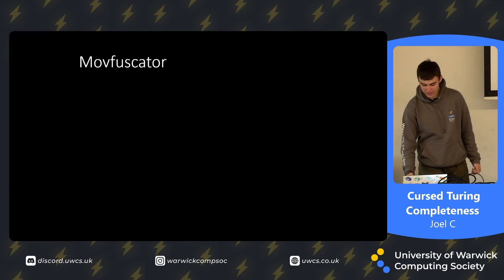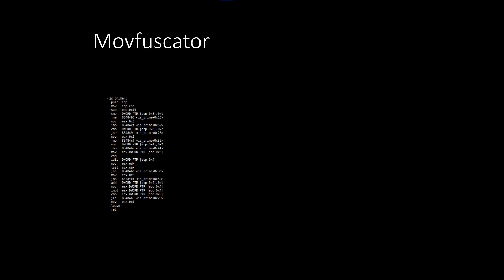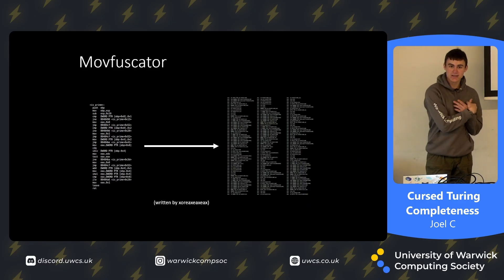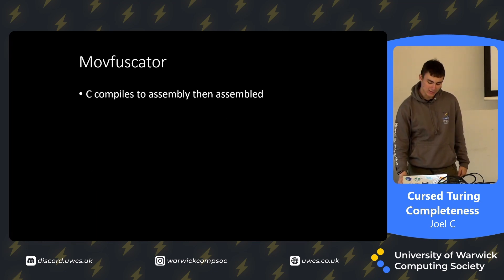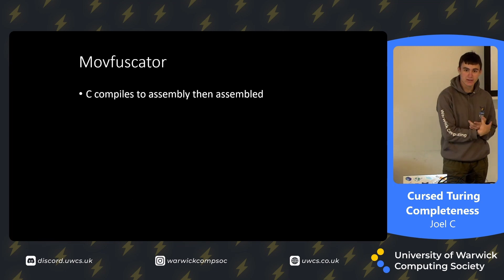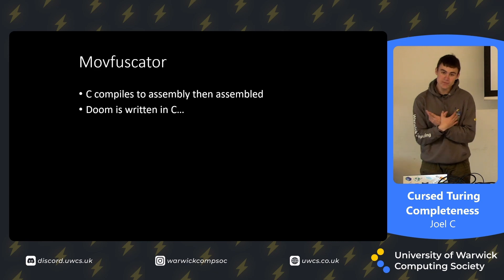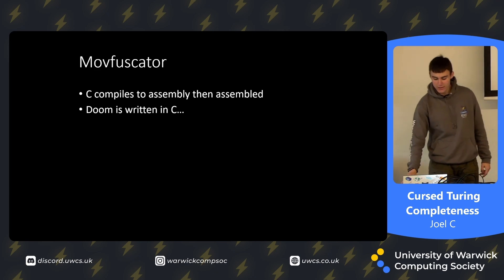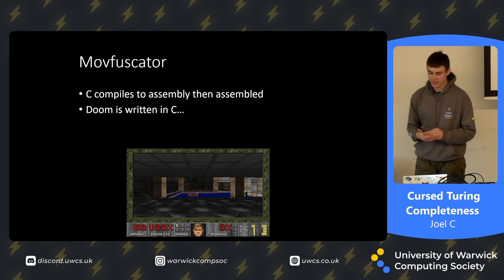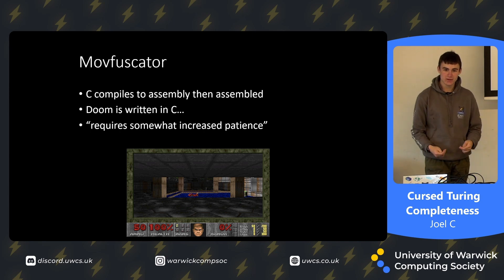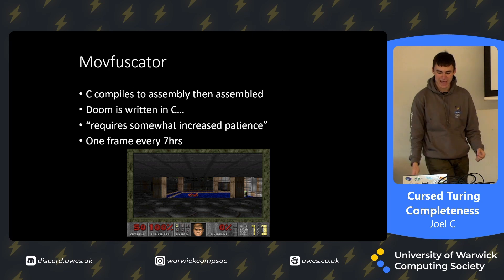Because computer scientists are insane, someone made something called MOVuSkater, which takes x86 assembly code and converts it entirely into MOV commands. Any program written in assembly can be converted into MOV. Fun fact: C in the GCC compilation pipeline compiles to assembly first, and there's a flag in GCC to stop at that stage. Also, DOOM is written in C, which means you can write DOOM entirely using MOV commands — though it renders at frames per hour rather than frames per second, which is not a great gaming experience.